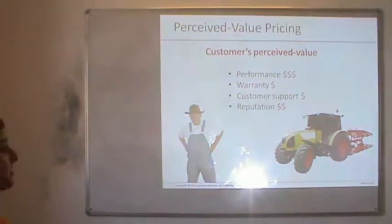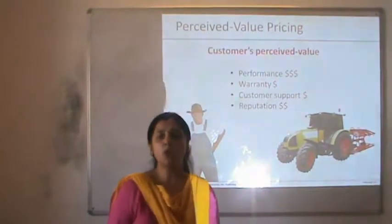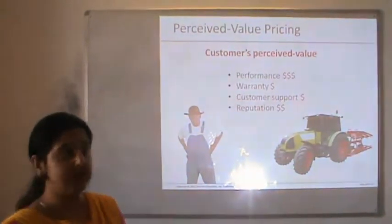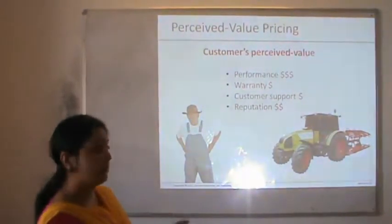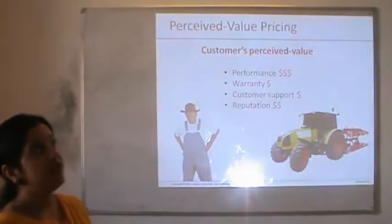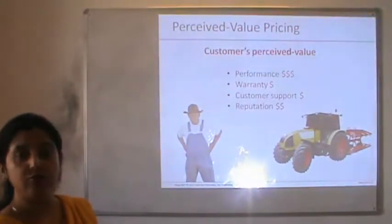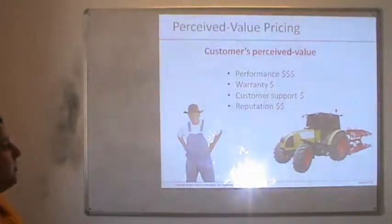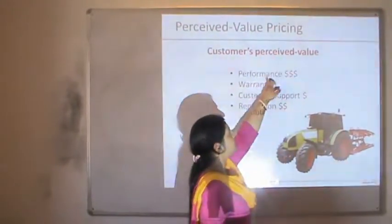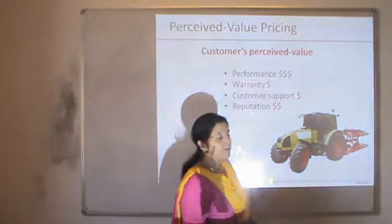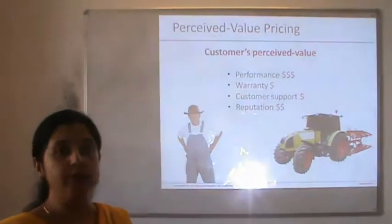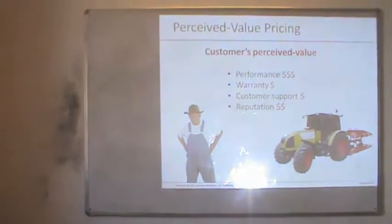The third is the customer's perceived value method. As against the formula methods, these are qualitative methods. Here the company tries to analyze how the consumer perceives their prices — how much money the consumer is willing to pay for performance, how much for warranty, customer support, or the reputation and goodwill of the company. Consumers are found to be most interested in the performance part and the reputation and goodwill part. Therefore the company charges different components for these different parameters, which together constitute the customer's perceived value.